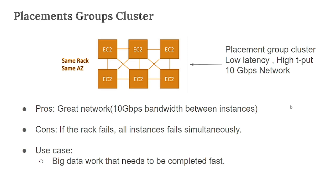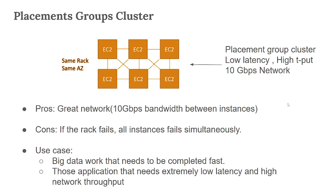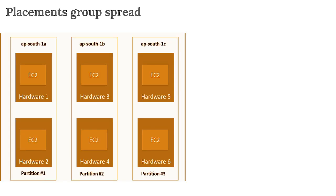Applications that need extremely low latency and high network throughput can place all EC2 instances on the same rack in the same Availability Zone using this Cluster placement group. Next comes Placement Group Spread.